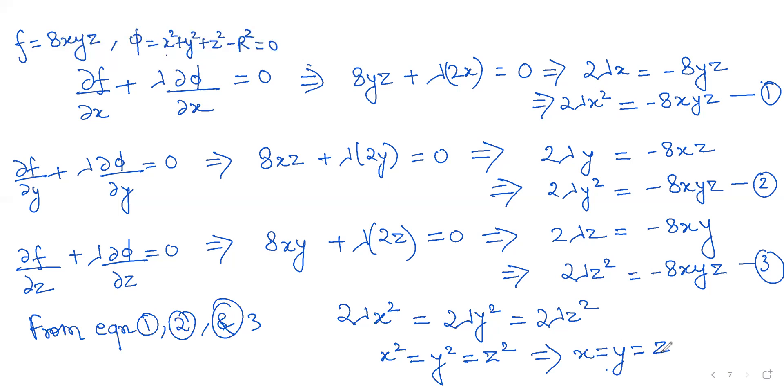When the three sides are equal, that means it is a cube. Hence, the rectangular solid is a cube.